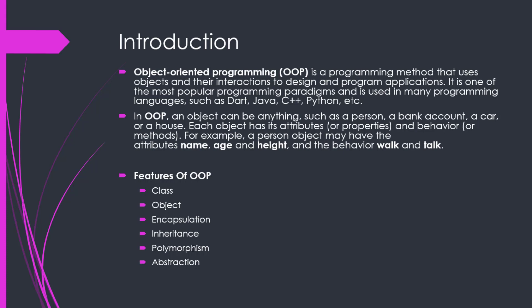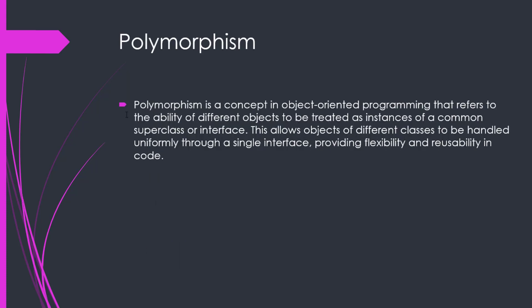Now in today's tutorial we are going to discuss polymorphism. Polymorphism is a concept in object-oriented programming that refers to the ability of different objects to be treated as instances of a common superclass or through inheritance. This allows objects of different classes to be handled uniformly through a single interface, providing flexibility and reusability in code.